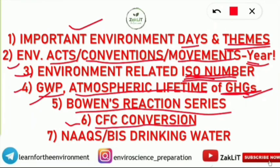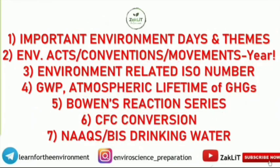The seventh topic is National Ambient Air Quality Standards and Bureau of Indian Standards for Drinking Water. You should know the important elements under both these standards. National Ambient Air Quality Standards and BIS Drinking Water Standards are very very important.